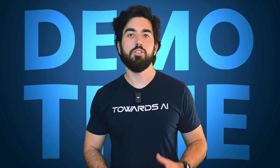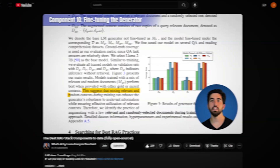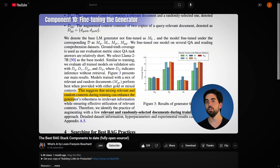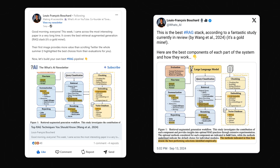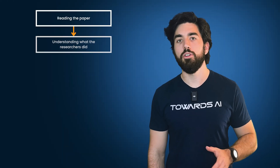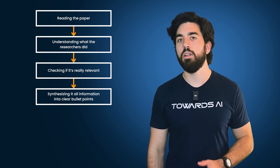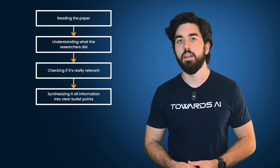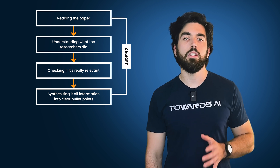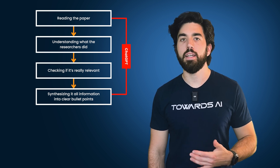In this demo, I'll try to replicate my work with a multi-agent system, or at least a part of it. As you know, I often cover new papers and techniques in the field on the channel. A part of what I do is to post on LinkedIn and Twitter to summarize the key insights from the papers. It requires me to read the paper, understand what the researchers did, if it's really relevant, and synthesize it all into clear bullet points or a nice summary. Of course, ChatGPT can do a good job at it if you send the paper, but it often requires multiple back and forths.